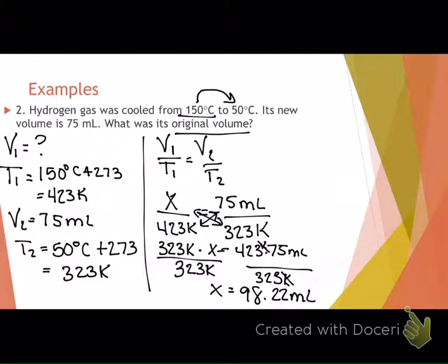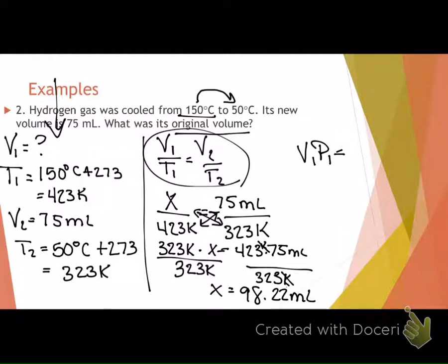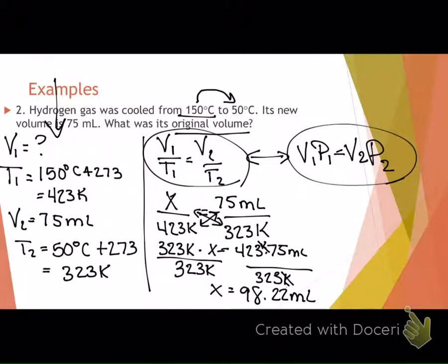To summarize: if a problem involves volume and temperature, use Charles' Law (V1/T1 = V2/T2). If it involves volume and pressure, use Boyle's Law (P1V1 = P2V2). Identify which variables are given to choose the correct equation. Make sure units agree and convert if necessary. Temperature must always be in Kelvin — convert from Celsius first, and if the answer needs to be in Celsius, convert back at the end.